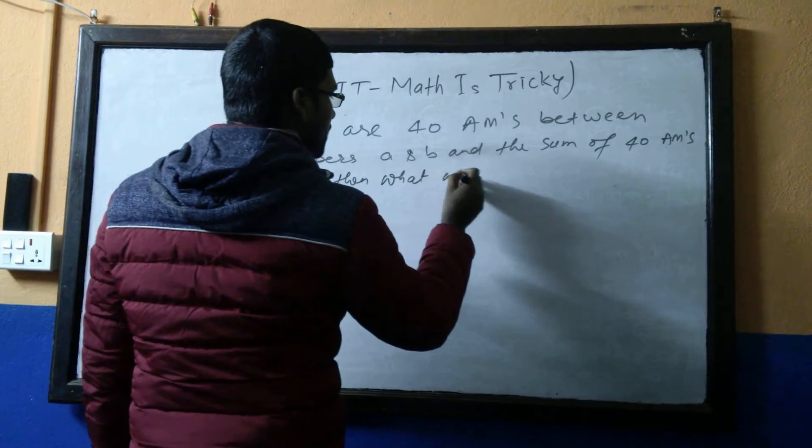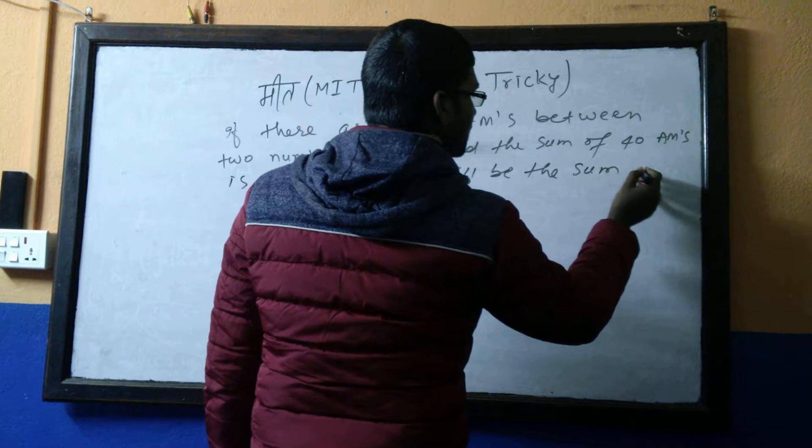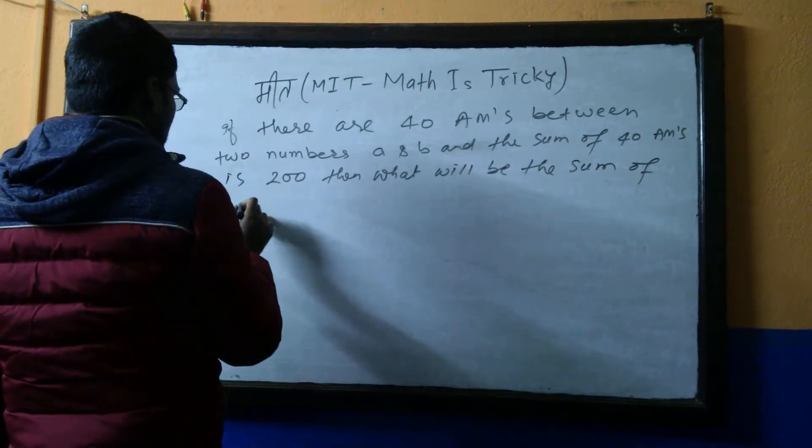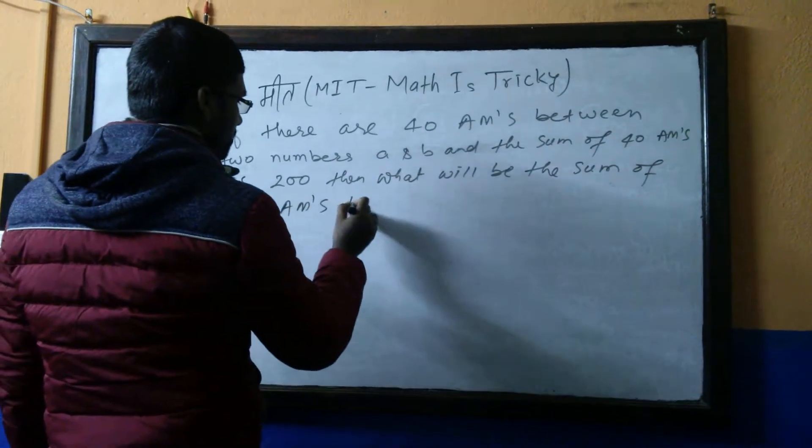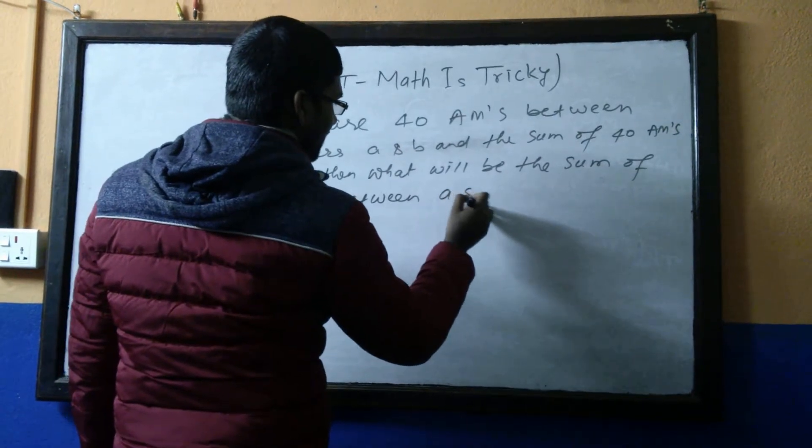What will be the sum of 80 AMs between A and B?